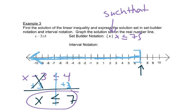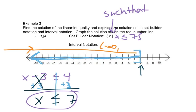For interval notation, we start reading from the left and hit that arrow first, so we have negative infinity — it's negative infinity because the arrow is going in the negative direction. Then we keep reading and hit 7 with a bracket. So the interval notation is negative infinity parenthesis, comma, 7 bracket. And that is set builder notation alongside interval notation.